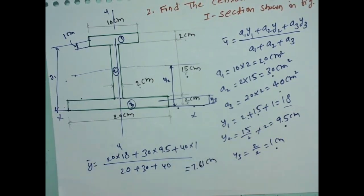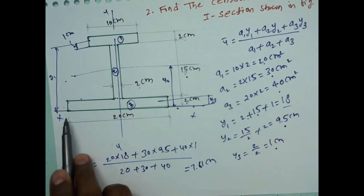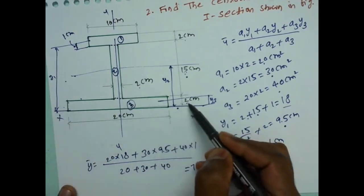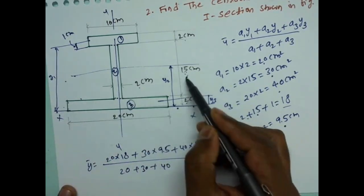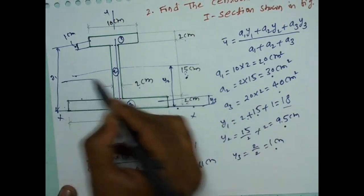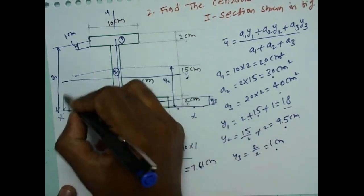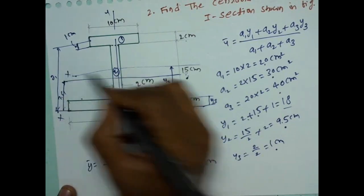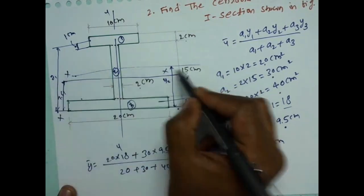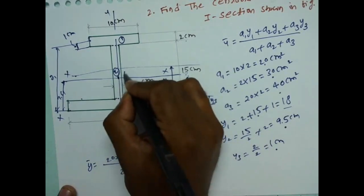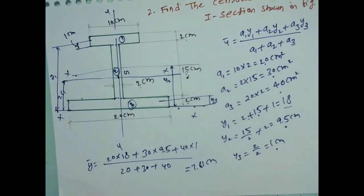Y-bar equals 7.61 cm. So at a distance of 7.61 from the reference X-axis, this is the central X-axis. And this is the central Y-axis. Thank you for watching my video.